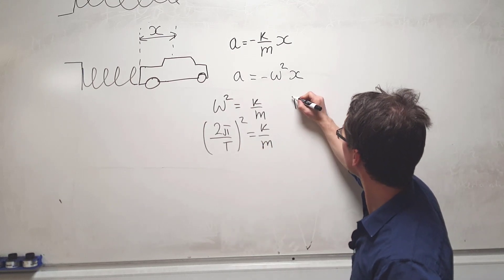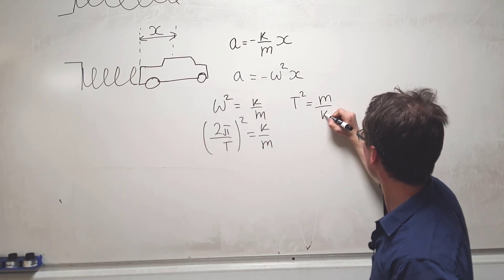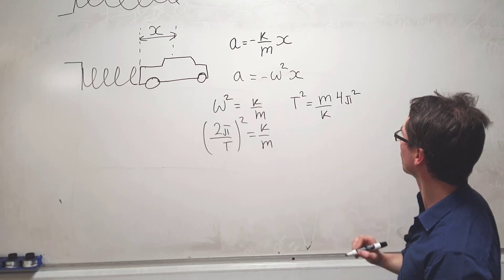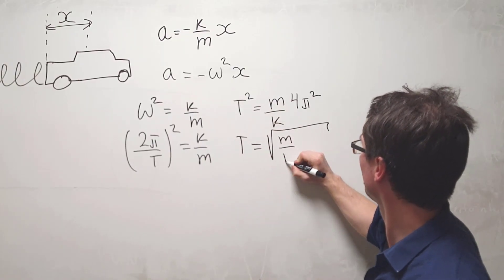Meaning that our time period squared will be equal to m/k multiplied by 4π². The time period is given by the square root of this expression.